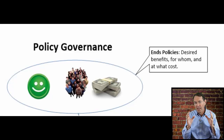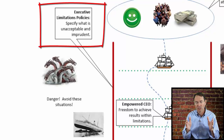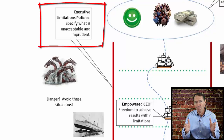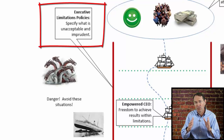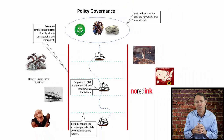With the focus provided by the ends policies, the board has the job of assuring that the CEO and the organization do not act imprudently. This can be a whole range of actions — making sure they don't act illegally or take on more risk than the board would like, or fail to do something critical to the success of the organization. By providing these boundaries which the CEO can't exceed, the CEO is then empowered within those to exercise their own judgment in carrying out the operations of the organization to achieve those ends.